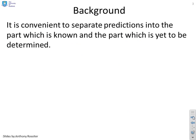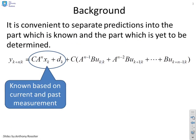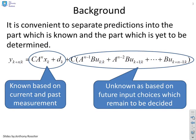So the background then. This is what we did in the previous video. We showed that the output predictions could be given basically as a part which is based upon the current and the past measurement, so the part based on xk and dk, and a part based upon the future inputs which are things that you have to decide.